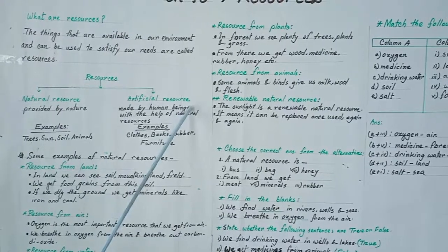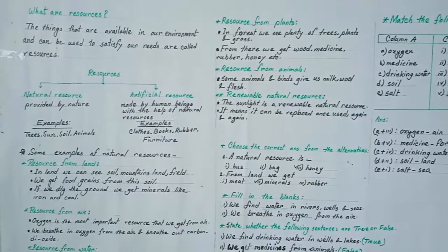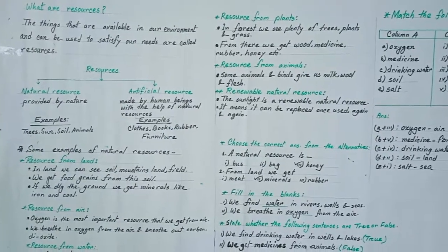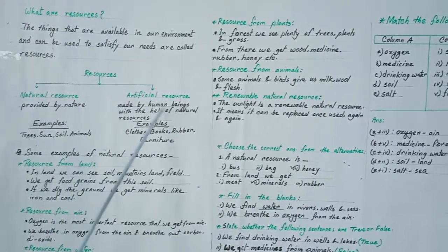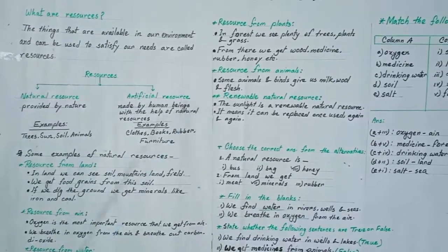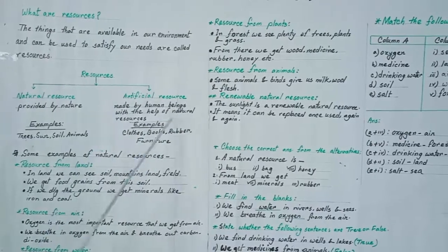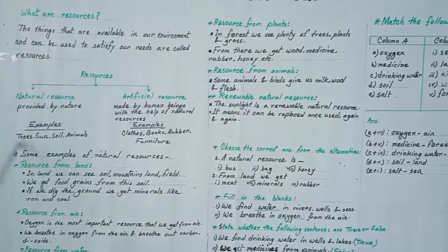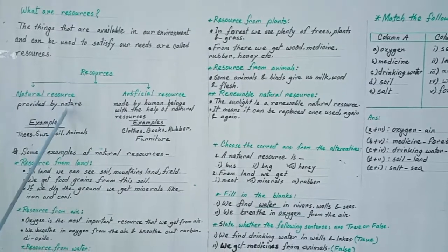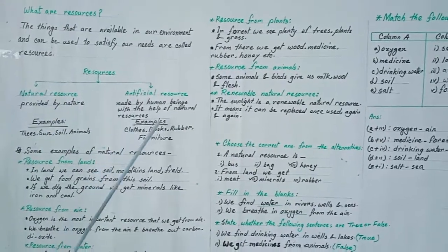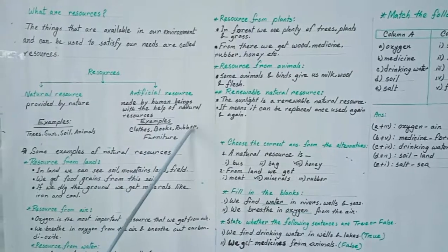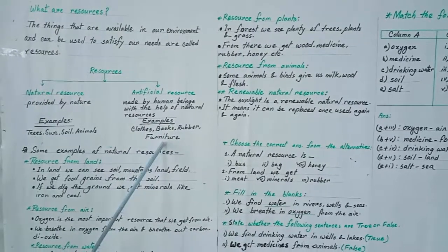Artificial resources are those things made by human beings with the help of natural resources. For example, cloths, books, rubber, furniture.